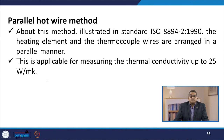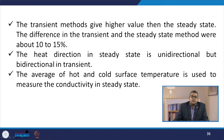The parallel hot wire method is illustrated in ISO 8894-2:1990. The heating element and thermocouple wires are arranged in a parallel manner and this method is applicable for measuring thermal conductivity up to 25 W/m·K. The transient method gives higher values than the steady state, with a difference of about 10–15%. The heat direction in steady state is unidirectional, but bidirectional in transient. The average of hot and cold surface temperatures is used to measure conductivity in steady state.